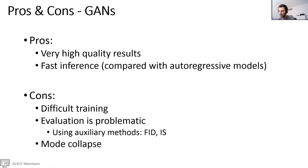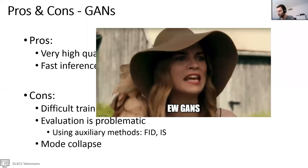The last con is mode collapse, where the GAN does not represent everything that you want it to represent. So today we leave GANs behind and look at other options for neural networks that will give us some of the advantages of GANs but hopefully without the cons.